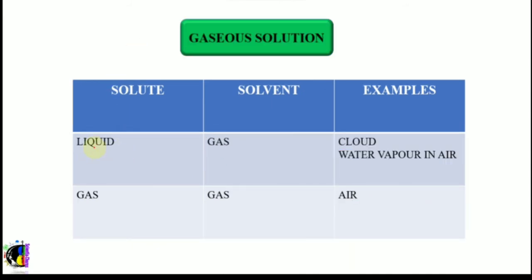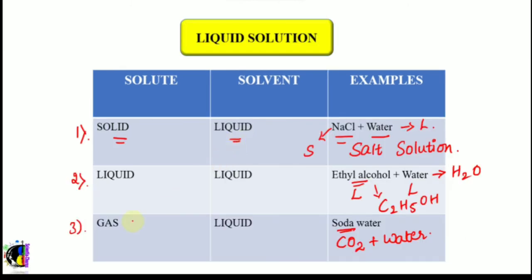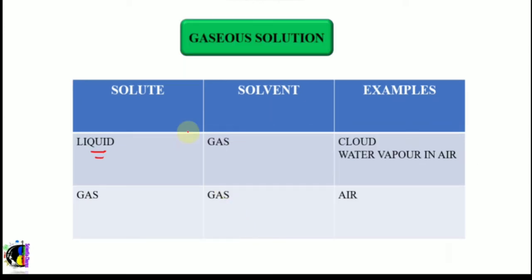Moving on to gaseous solutions. Here the solute is liquid and the solvent is gas — the opposite of the previous case where gas was the solute and liquid was the solvent. The example is clouds. Water vapor — H2O molecules in liquid state — is mixed with the air present in the atmosphere. The H2O molecules are in lesser amount, while air, which is a mixture of gases, is in larger amount and is considered the solvent. So liquid plus gas gives clouds.